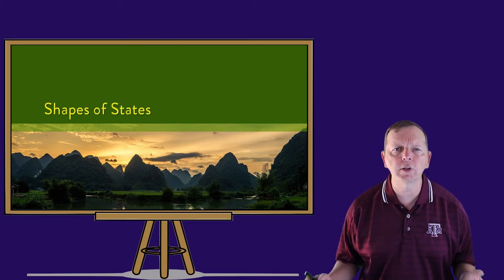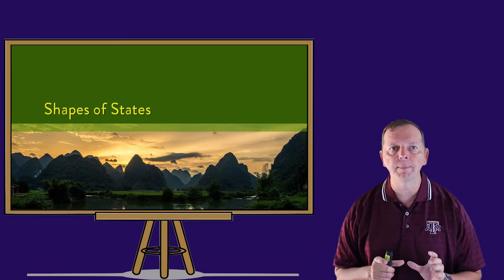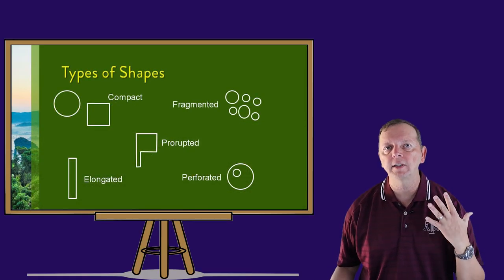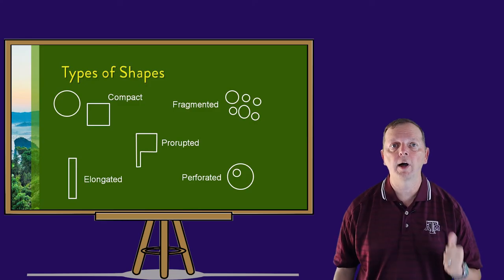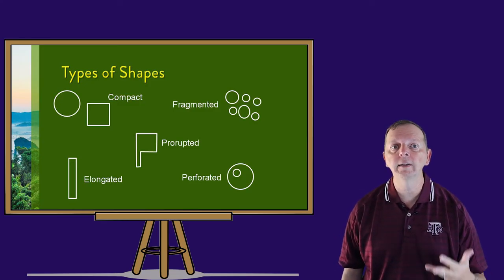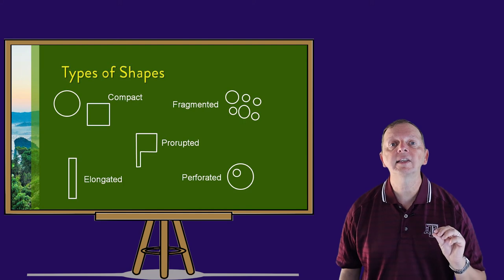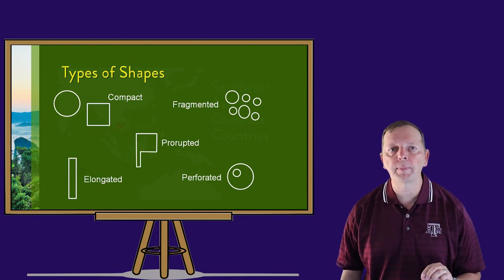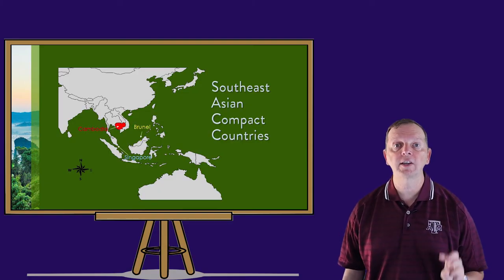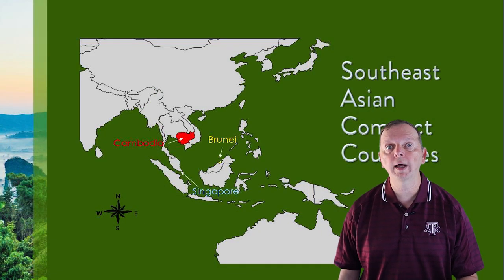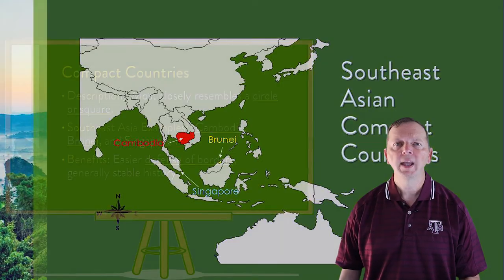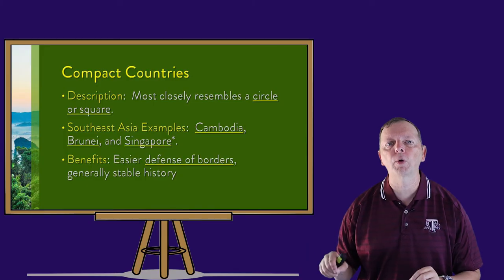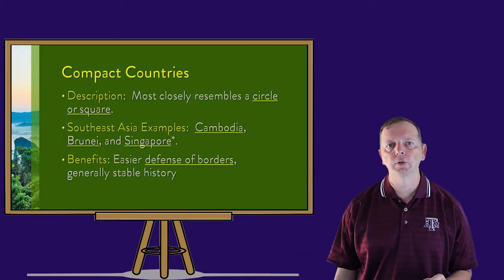One of the ways that geographers look at countries is their shape — it can tell you a lot about that country. There are five basic shapes of states: compact, fragmented, prorupted, elongated, and perforated. Southeast Asia has all but one of these. The first shape is a compact country, and Southeast Asia has three — Cambodia, Brunei, and Singapore. A compact country looks sort of like a circle or a square, where every portion of the border is roughly equidistant to the center.